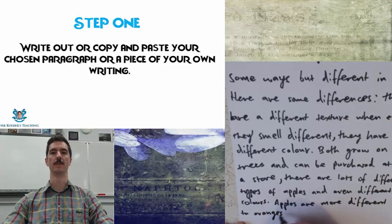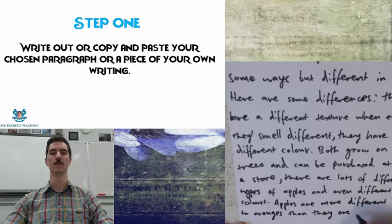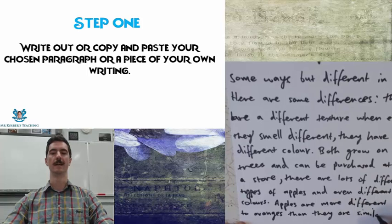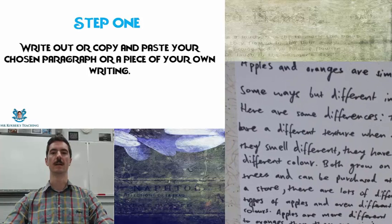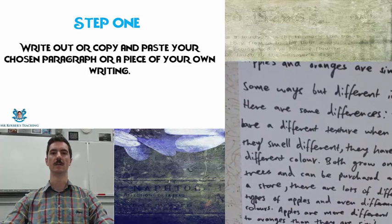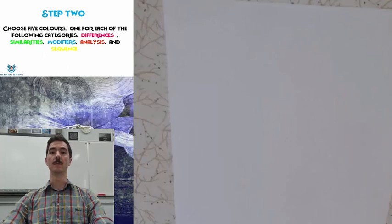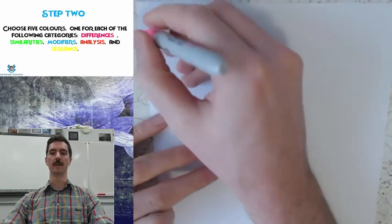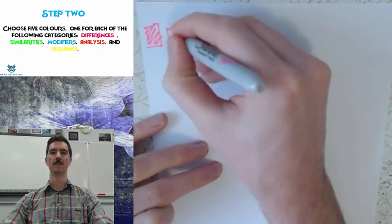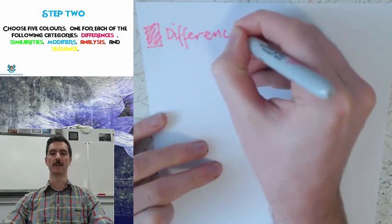I'd recommend you write this out rather than type, as it makes it a lot more visual and a lot easier for you to work out how you're going to change things. In most assessment types, you'll be writing on a piece of paper rather than typing. So step two is to choose five colors, one for each of the following categories.